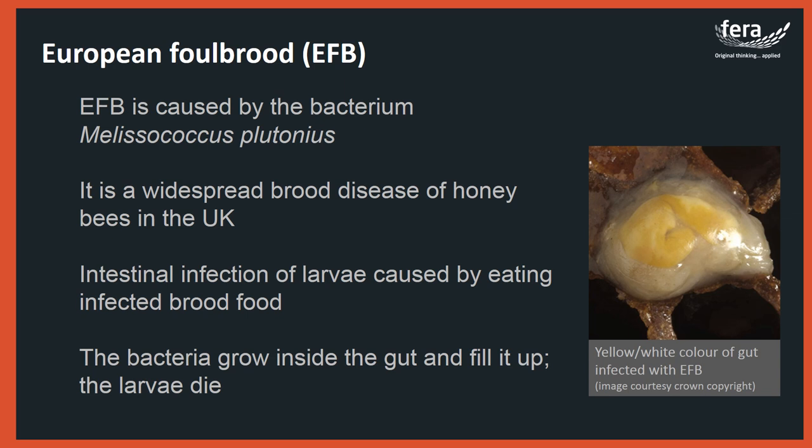European Foulbrood is a disease caused by the bacterium Melissococcus plutonius. It is a widespread brood disease in the UK with approximately 300 reported cases per year. This disease is a statutory notifiable disease, meaning that beekeepers are legally obliged to inform the National Bee Unit if they suspect it in any of their colonies under the Bee Diseases and Pest Control Orders of 2006.